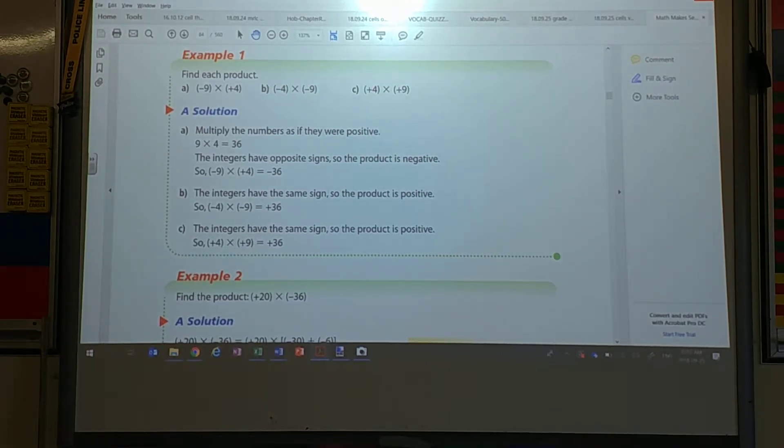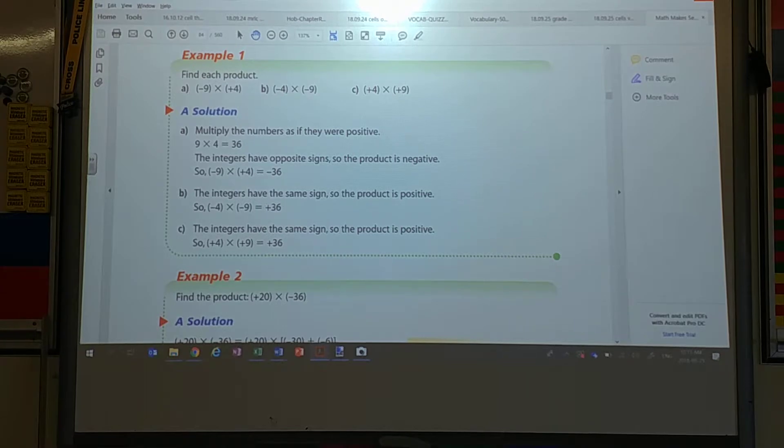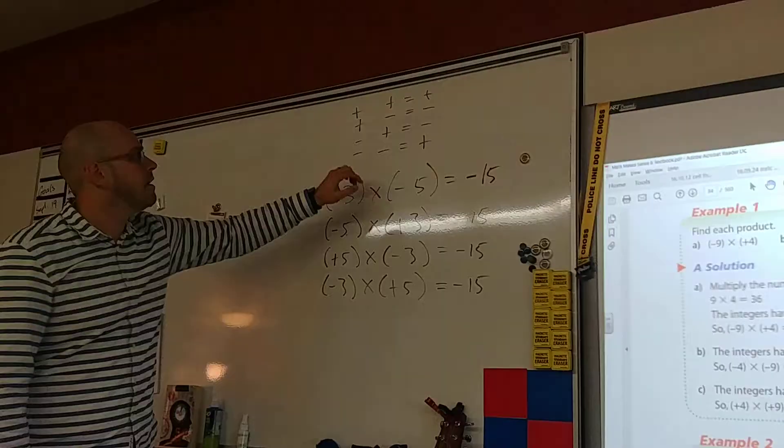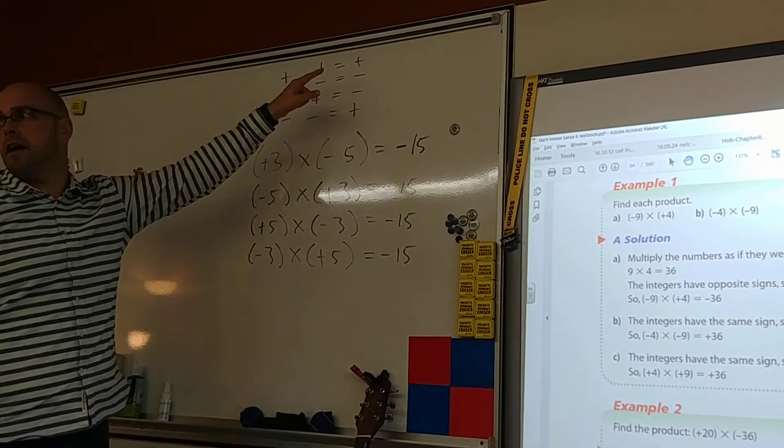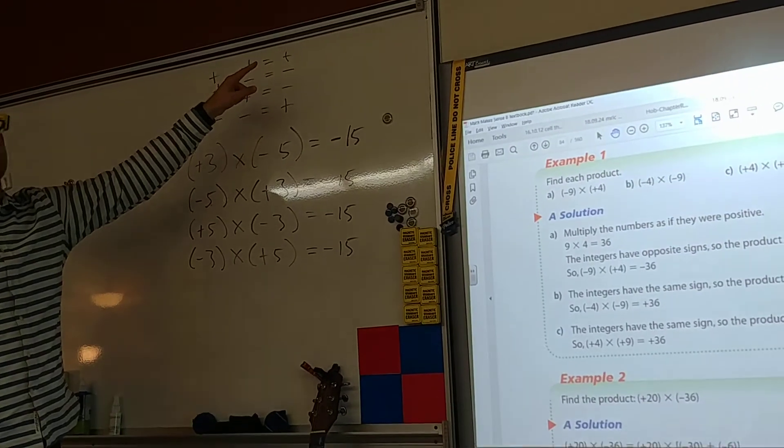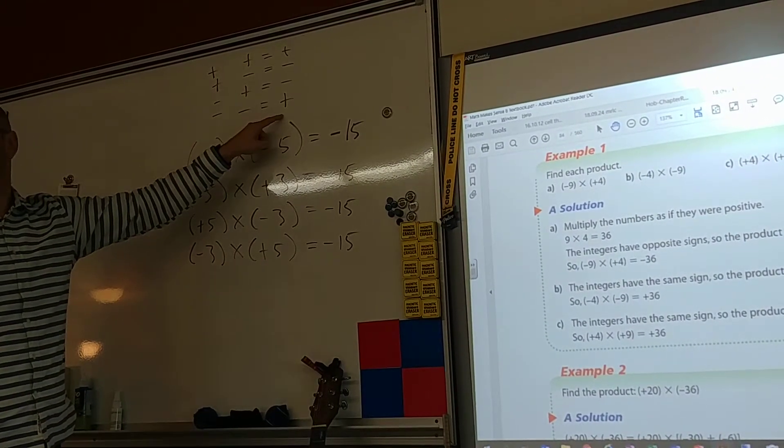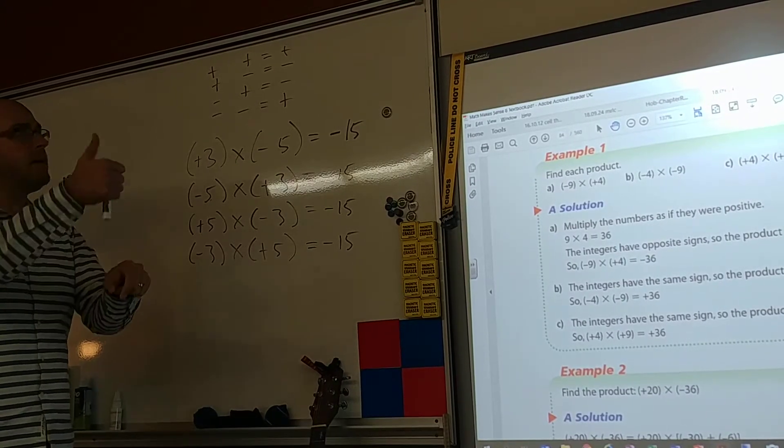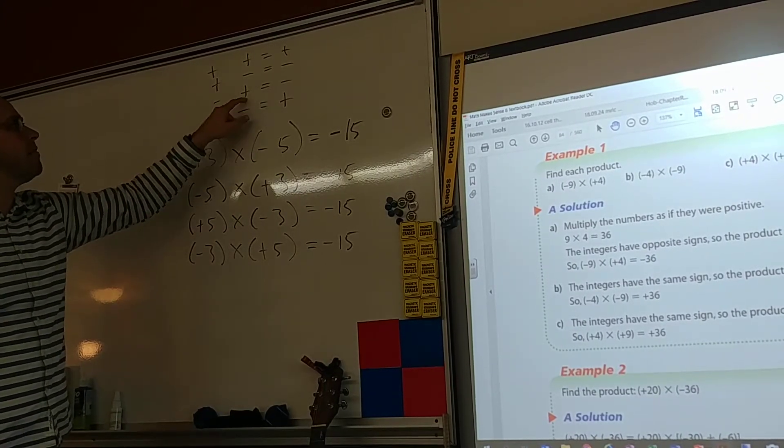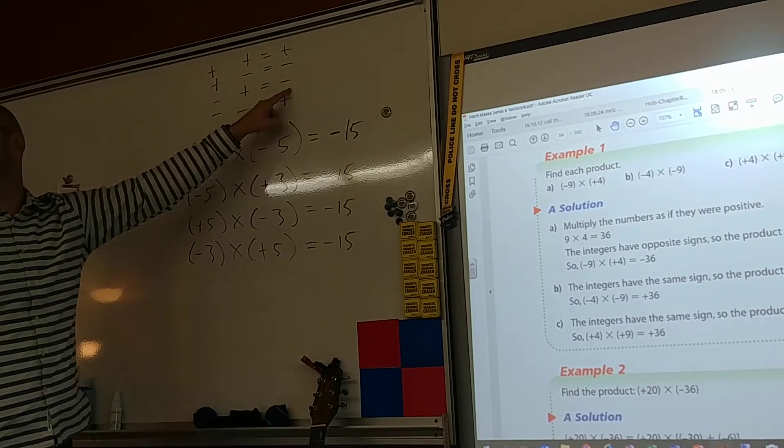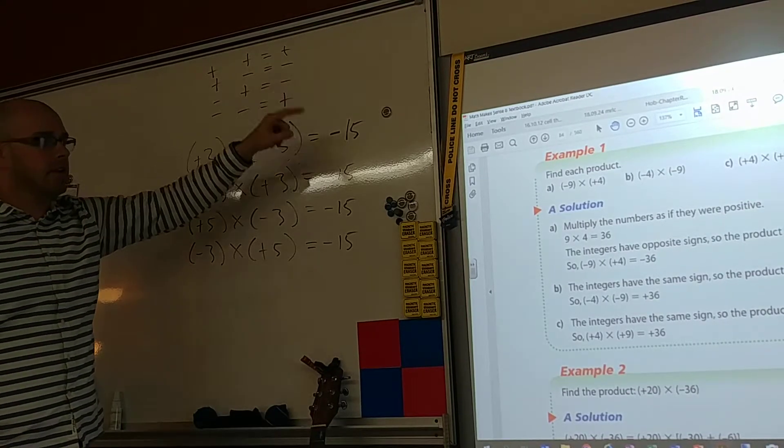Find each product. Can you look up here again? Positive plus a positive is what? Positive. Positive. Same, same. Good. Negative plus a negative equals? Positive. It's same, same. It's good. Positive, negative, negative, positive. It's different. Different goes down. It's a negative. So let's take a look.